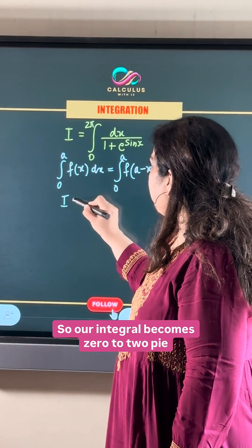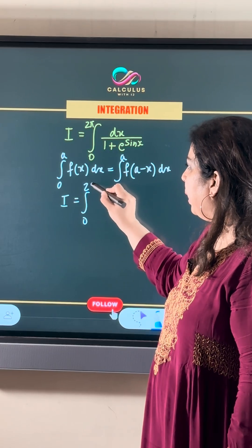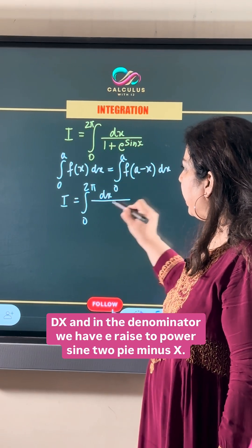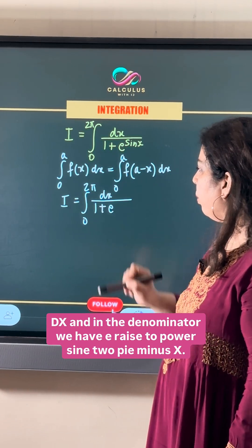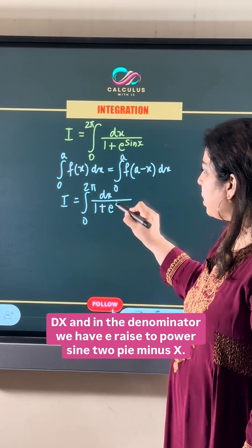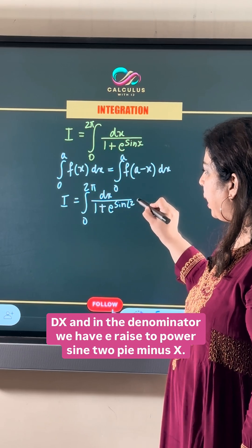So our integral becomes 0 to 2π dx, and in the denominator we have 1 plus e raised to power sin of 2π minus x.